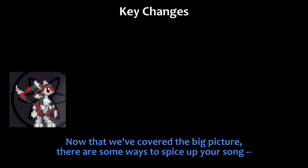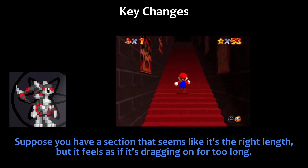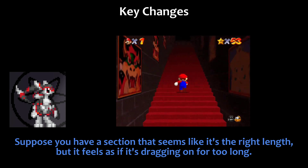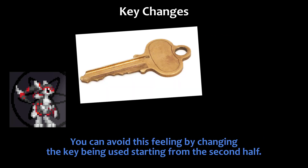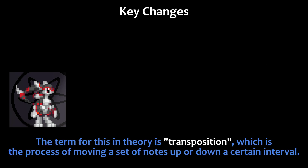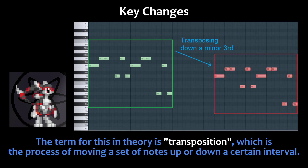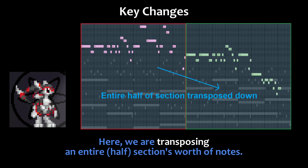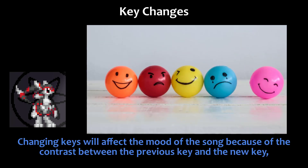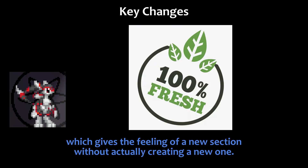Now that we've covered the big picture, there are some ways to spice up your song. Suppose you have a section that seems like it's the right length, but it feels as if it's dragging on for too long. You can avoid this feeling by changing the key used starting from the second half. The term for this in theory is transposition, which is the process of moving a set of notes up or down a certain interval. Here, we're transposing an entire half section's worth of notes. Changing keys will affect the mood of the song because of the contrast between the previous key and the new key, giving the feeling of a new section without actually creating a new one.